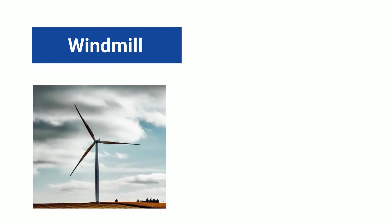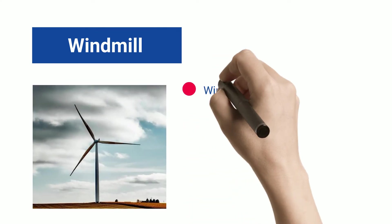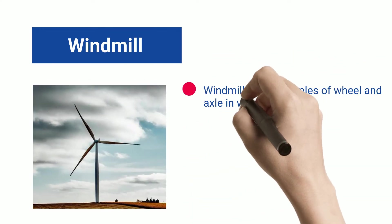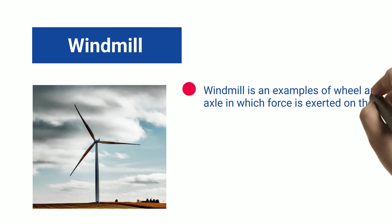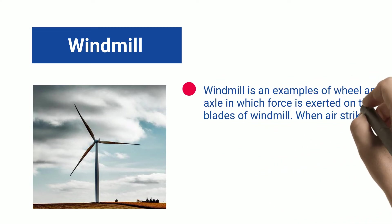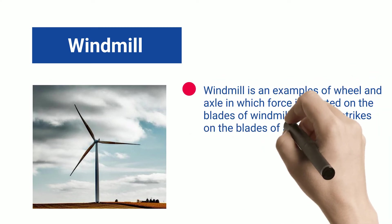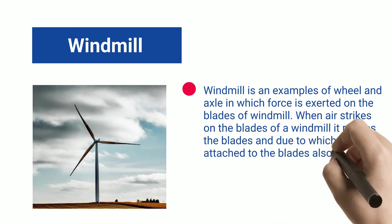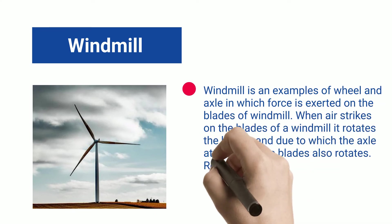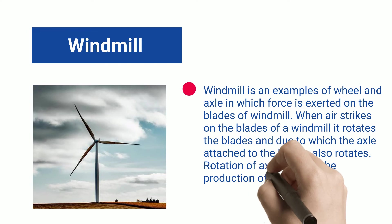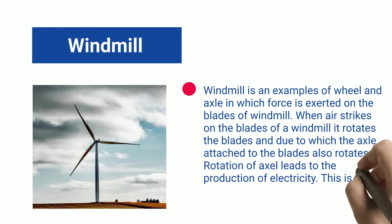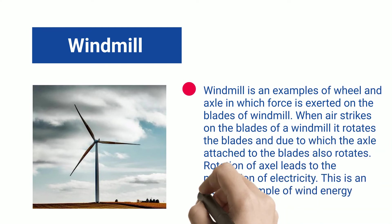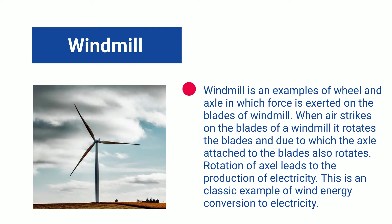Windmill. A Windmill is an example of wheel and axle in which force is exerted on the blades of the windmill. When air strikes on the blades of a windmill, it rotates the blades, and due to this the axle attached to the blades also rotates. Rotation of the axle leads to the production of electricity. This is a classic example of wind energy conversion to electricity.